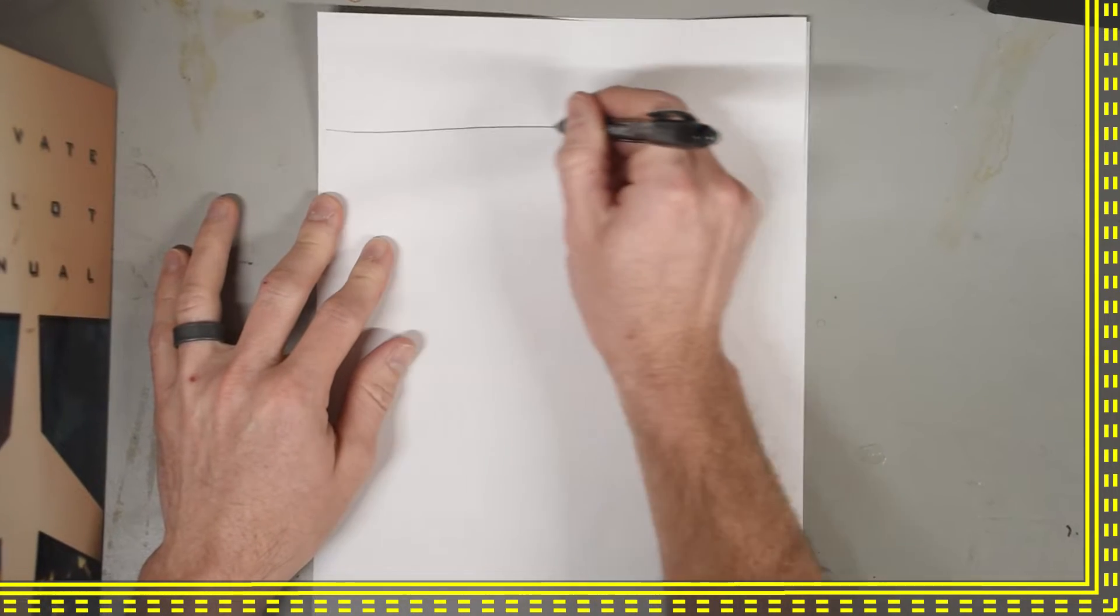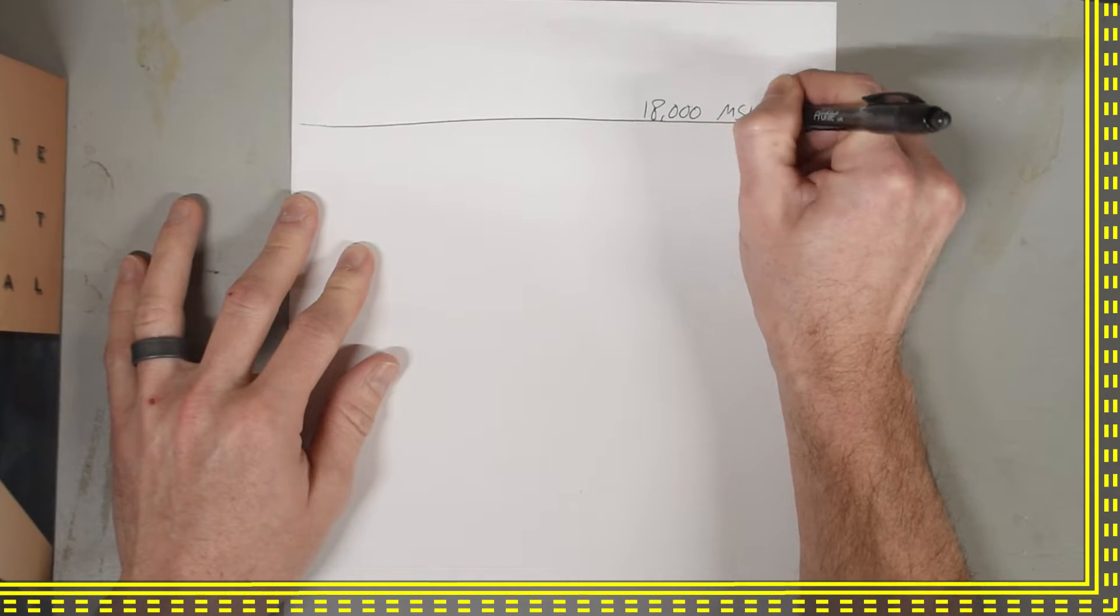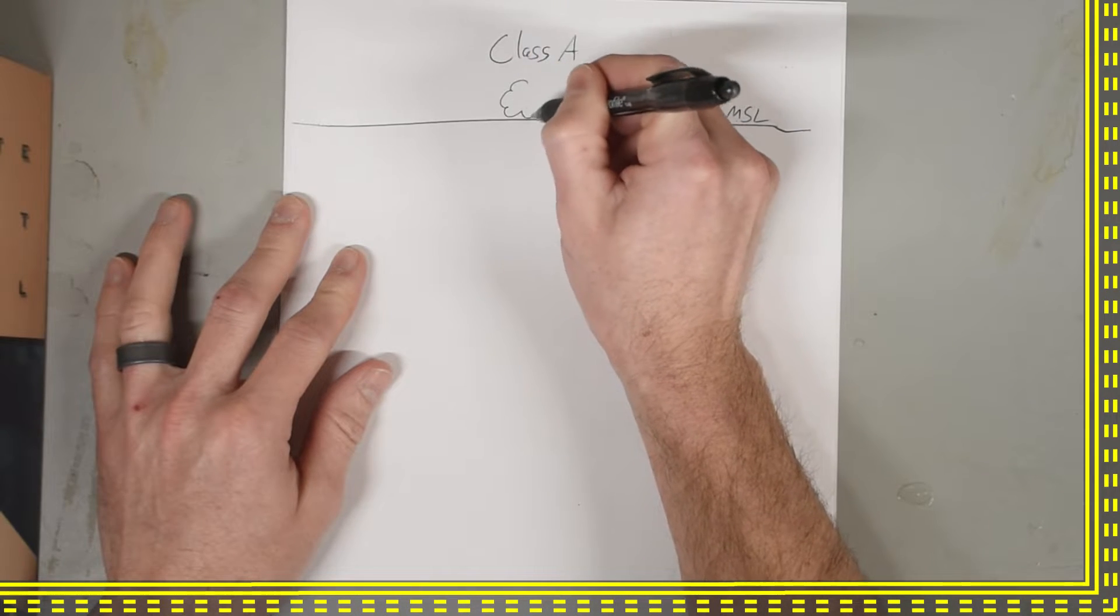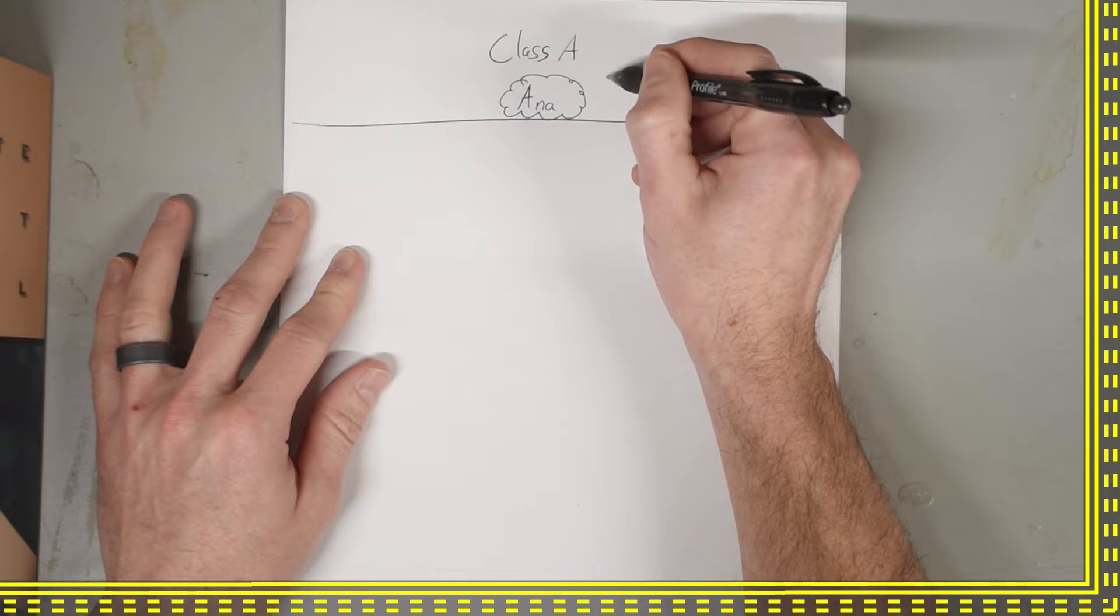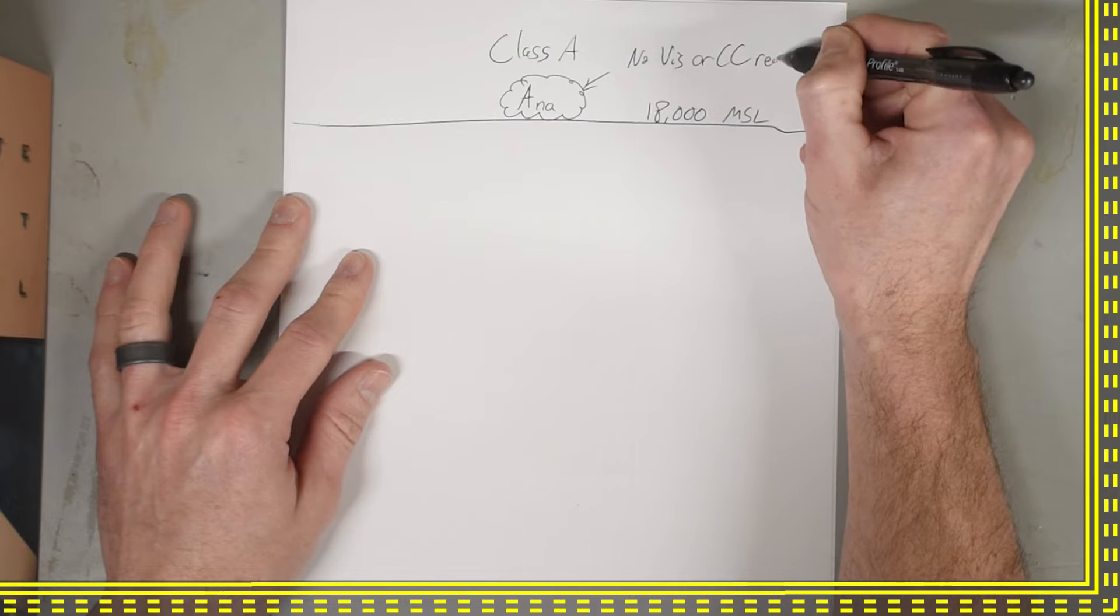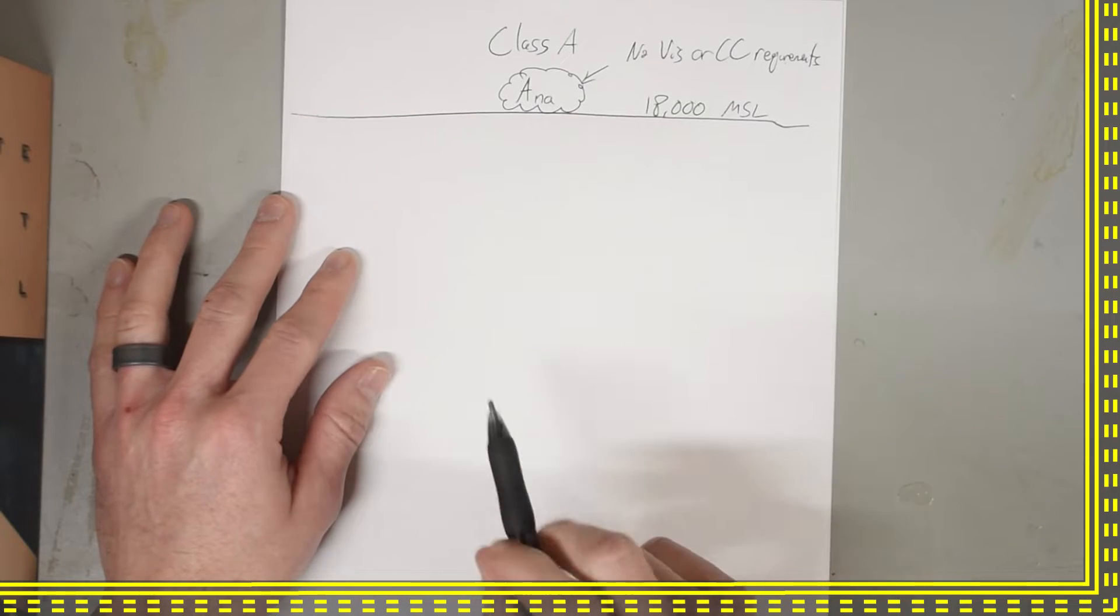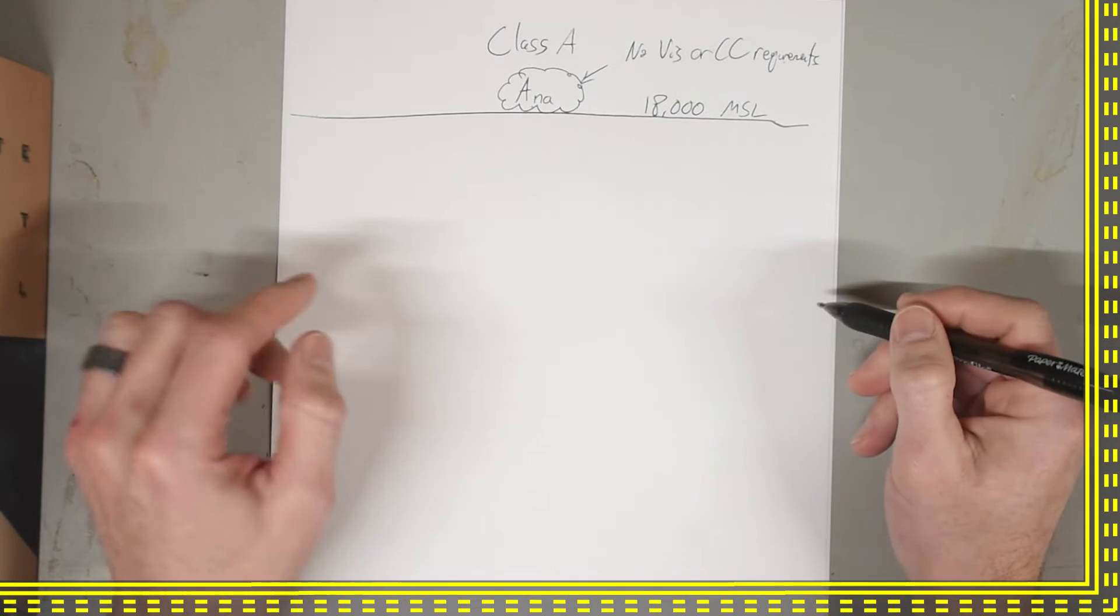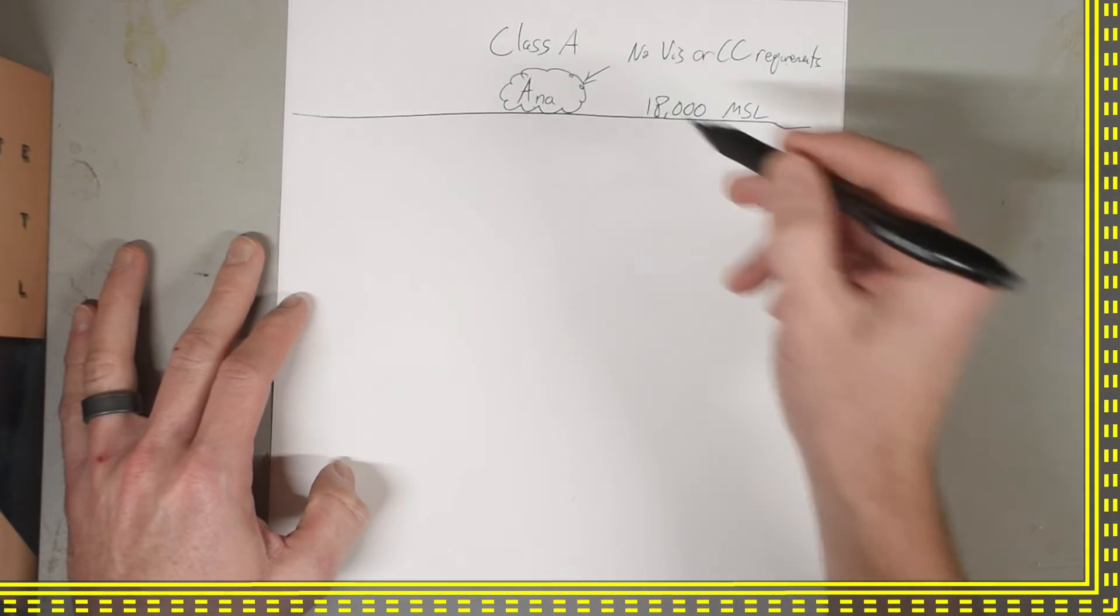So I first draw my line up here. This represents 18,000 MSL. Above this is class A airspace. Draw my little cloud. ANA, A-N-A. Up here, there is no VIZ or cloud clearance requirements. Because you have to be on an IFR flight plan to fly in class A airspace. And so that does not apply. So ANA above 18,000. You may be asked that on a test, but you might. You certainly will on an IFR, but probably not on a VFR. But you need to know that just in case.